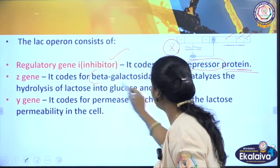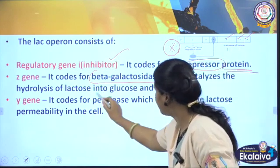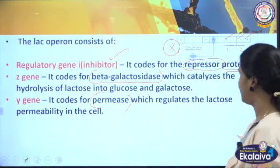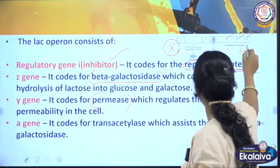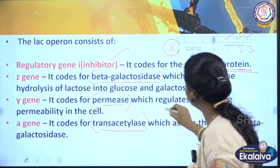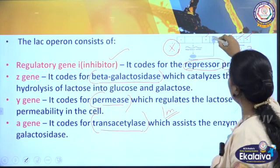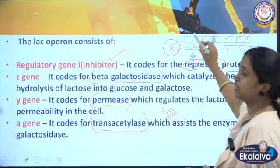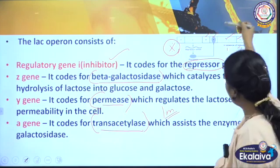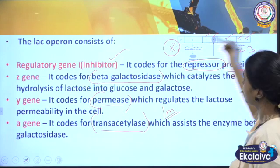Z gene codes for beta-galactosidase. Y gene codes for permease — it is going to allow the lactose to enter the cell. A gene codes for transacetylase. Let us recap: I is the inhibitor gene, P is the promoter, O is the operator, Z codes for beta-galactosidase, Y codes for permease, and A codes for transacetylase.